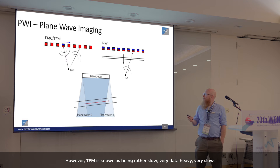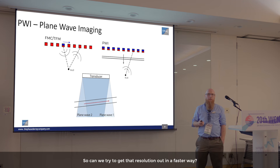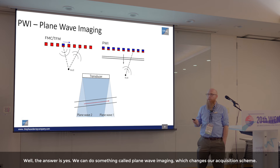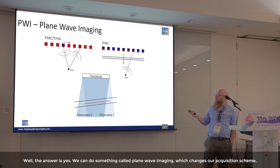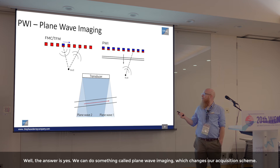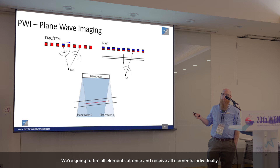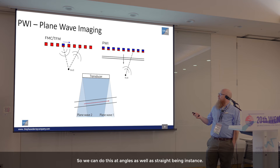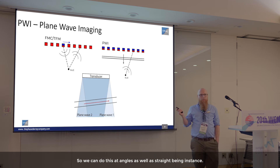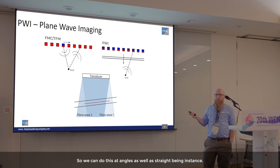However, TFM is known as being rather slow — very data-heavy, very slow. Can we try to get that resolution in a faster way? The answer is yes. We can do something called plane wave imaging, which changes our acquisition scheme. We fire all elements at once and receive all elements individually, and we can do this at angles as well as straight beam incidence.